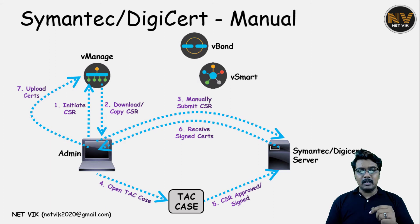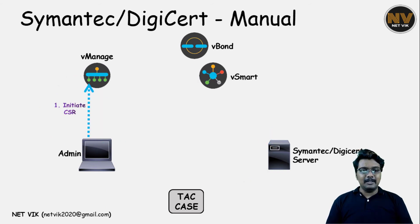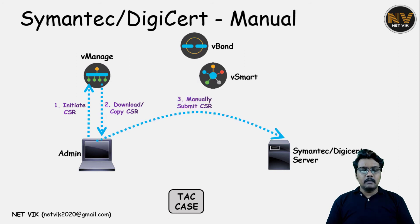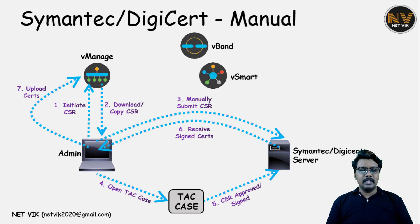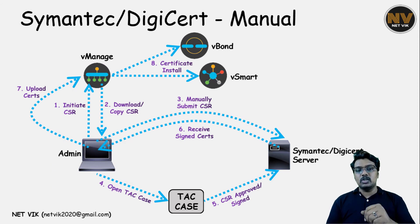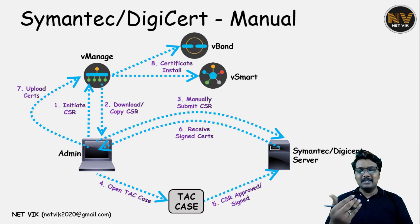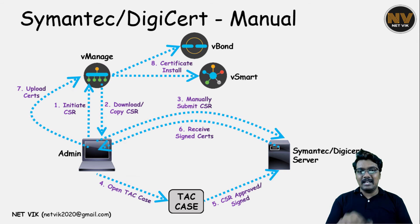For vBond and vSmart, the admin initiates a CSR but this time it will be for vBond or vSmart. He downloads a copy of the vBond or vSmart CSR, manually submits it to the CA server, opens a TAC case, the TAC engineer approves it, and then the administrator receives the signed certificate hopefully via email. The administrator logs into vManage and uploads the vBond or vSmart signed certificate. Then vManage installs those signed certificates to vBond and vSmart — here also vManage acts as a proxy. This manual method comes in handy when the vManage does not have internet access in a customer environment.